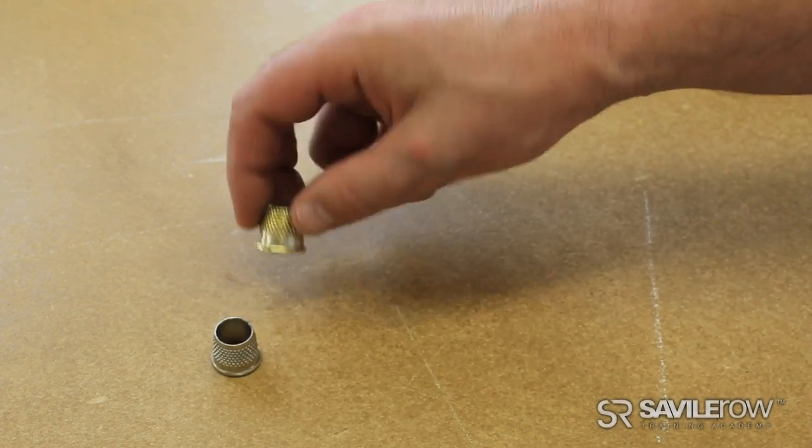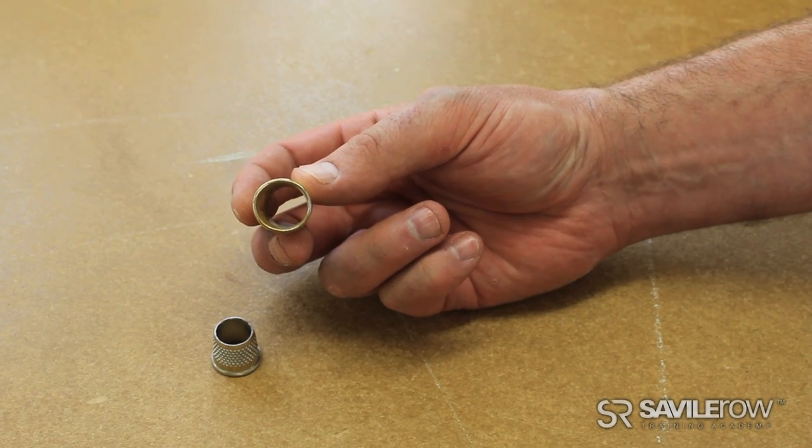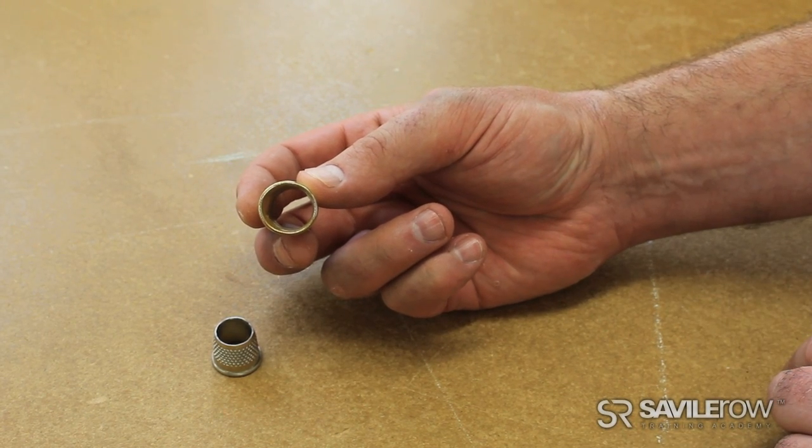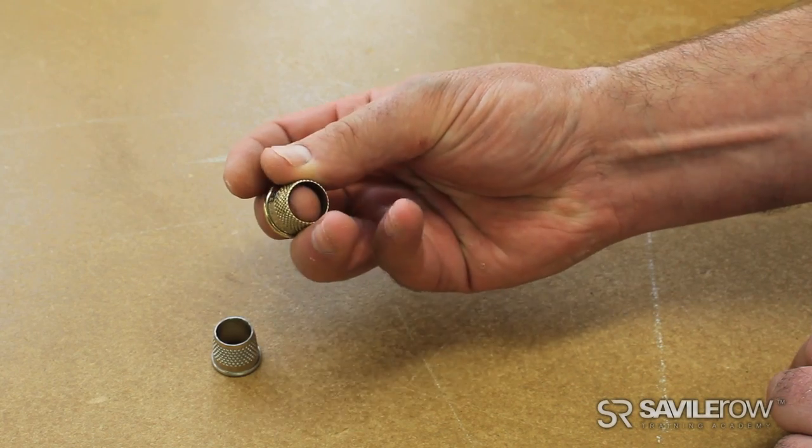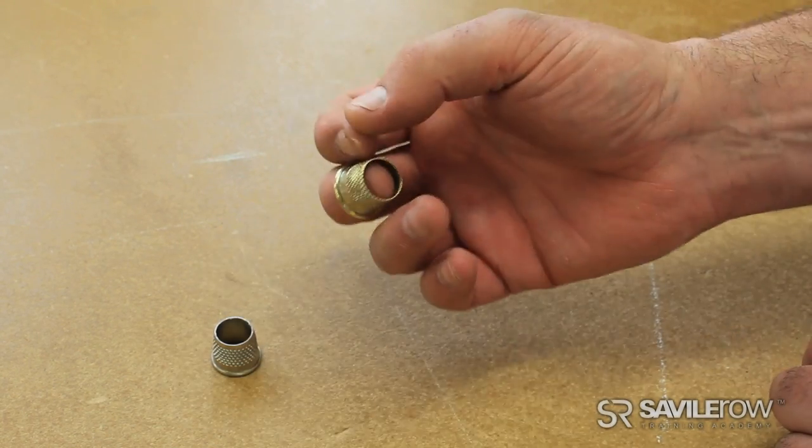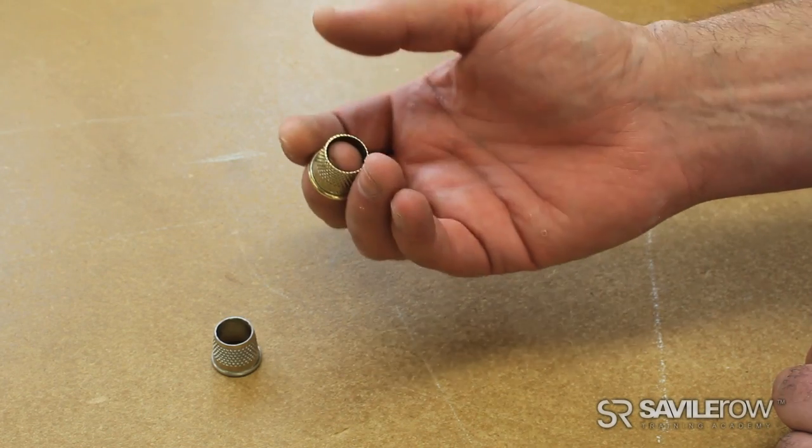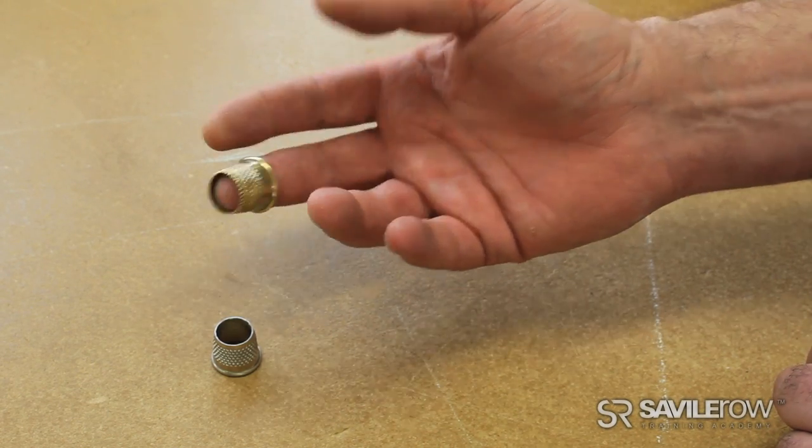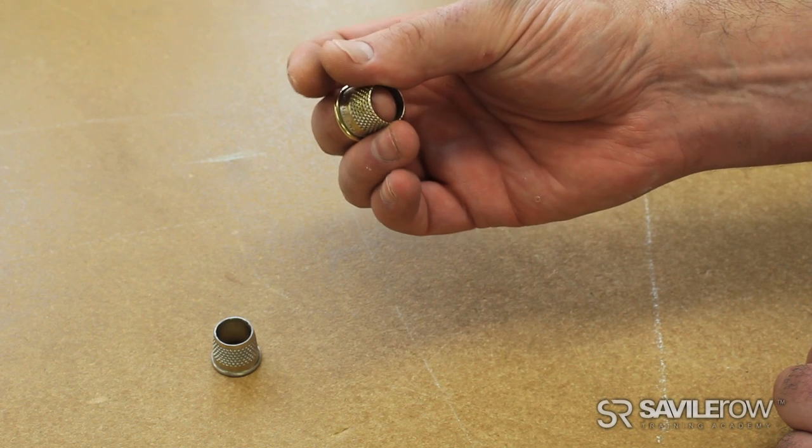But what that will do, here's one I've done earlier, is it will change the shape of your thimble. Now when you put that on your finger it will feel perfectly natural. It will take a little bit of time to get comfortable in the sense that you've never worn one before, but it won't fall off and it will feel a bit comfortable.